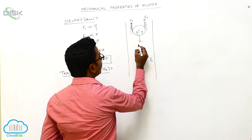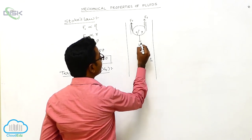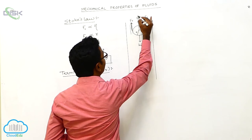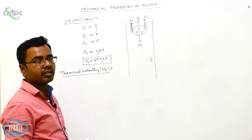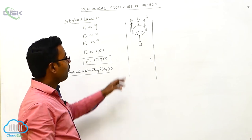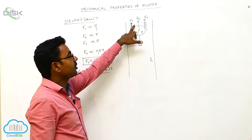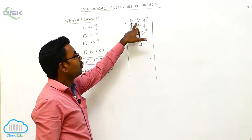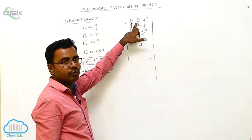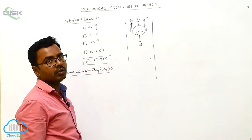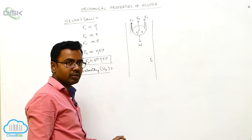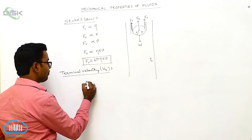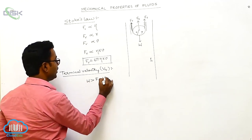If the mass of the sphere is m, then its weight W = mg acts vertically downward. Along with it, it experiences an upward buoyant force Fb. So totally three forces act: viscous force Fv upward, buoyant force Fb upward, and weight W downward. Since the sphere is falling down, the downward force W is greater than the sum of Fb and Fv.